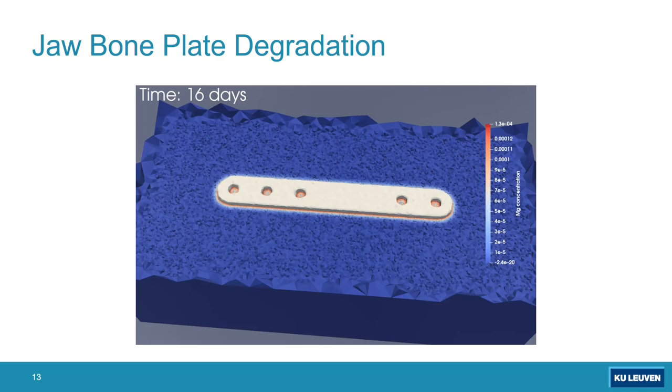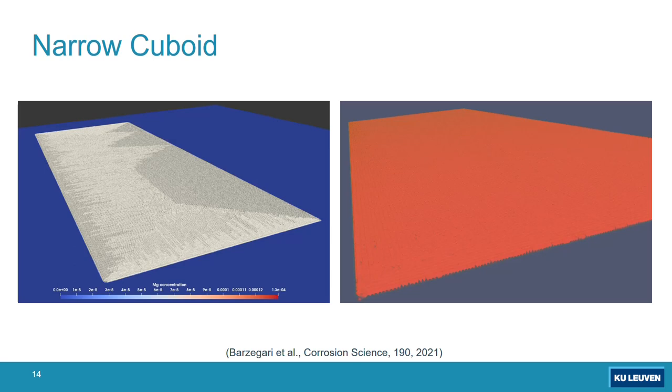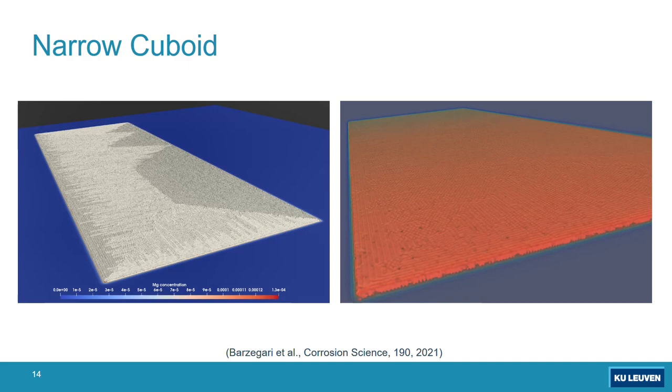Before going to the case study, we usually deal with simpler geometries to validate the models. This is a narrow cuboid that we had simulated, and then we compare the quantitative output of the models with experimental data that we have.